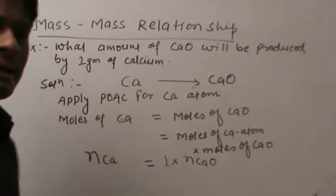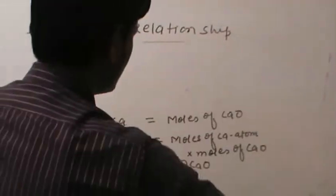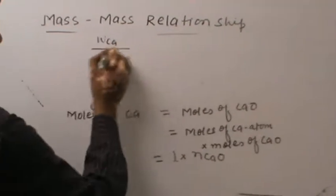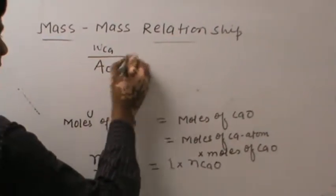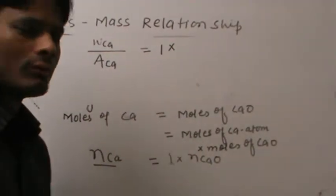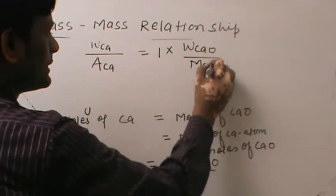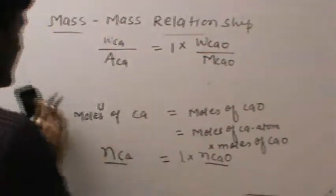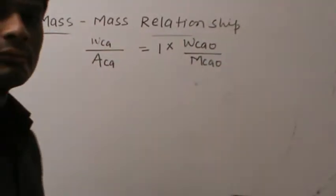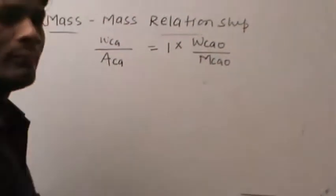Here, we have to just expand this formula. And that formula is number of moles of Ca means weight of Ca divided by atomic mass of Ca equals to one into weight of CaO divided by molecular mass of CaO. In this question, we have amount of calcium, atomic mass of calcium, molecular mass of calcium oxide.